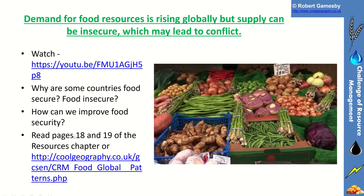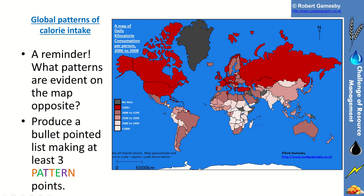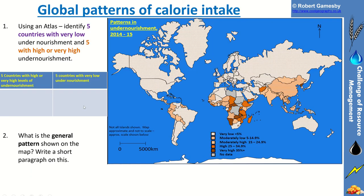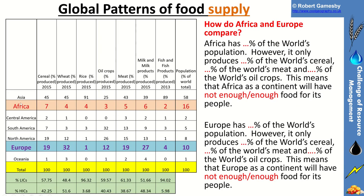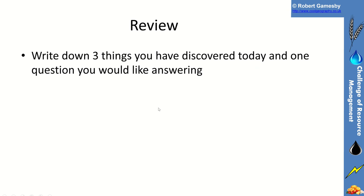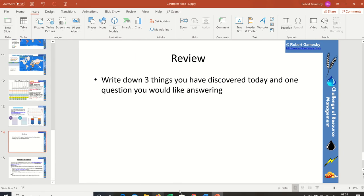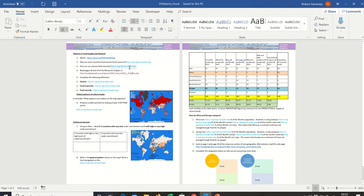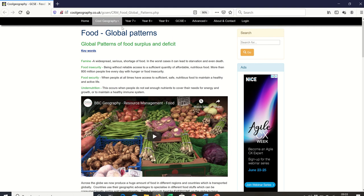For your tasks: watch the video provided and answer a couple of questions — why are some countries food secure or insecure, and how can we improve it? Read the website page, then produce a bullet-pointed list on the map we discussed. Identify five countries with an atlas that have very high levels of undernourishment and five with very low. Write a paragraph on the general pattern, compare Africa with Europe in terms of food produced, and complete the graphic on why we are consuming more food using information on population size, growth, and economic development. There's a worksheet for your answers.